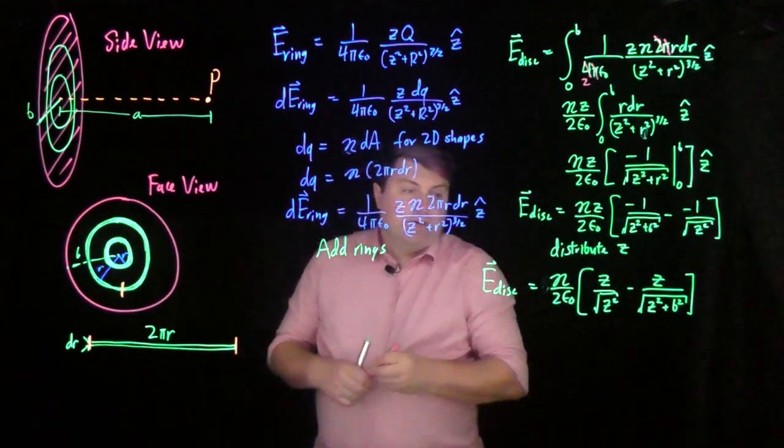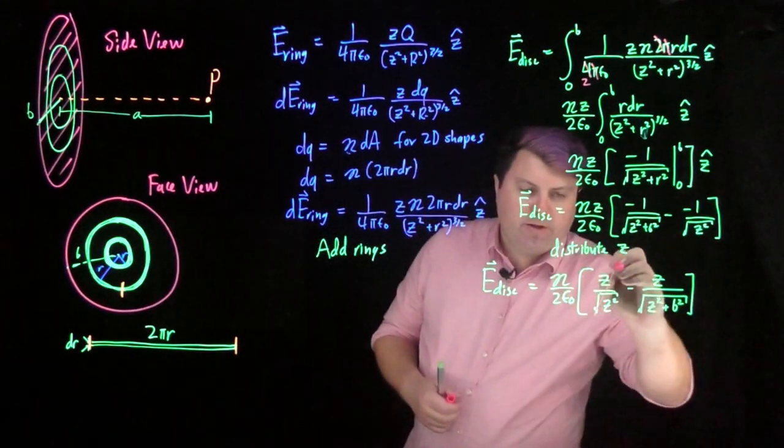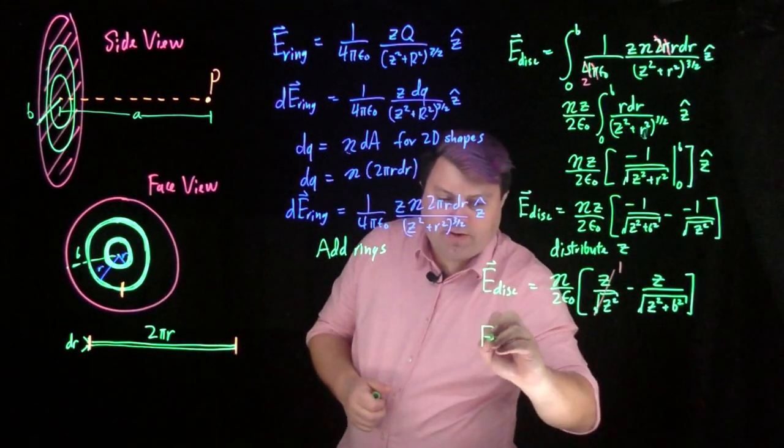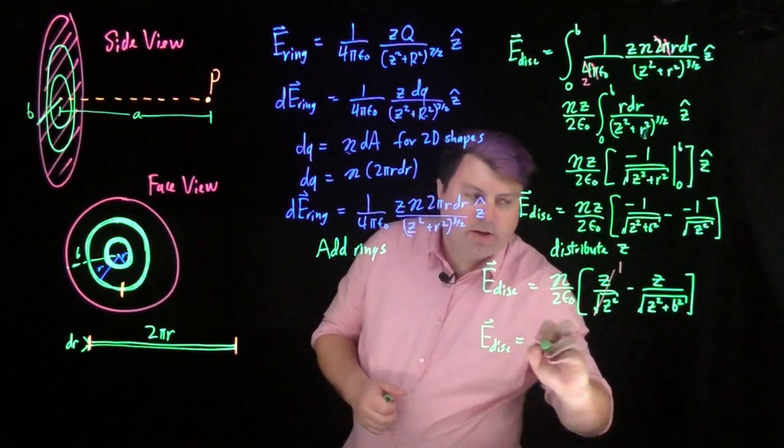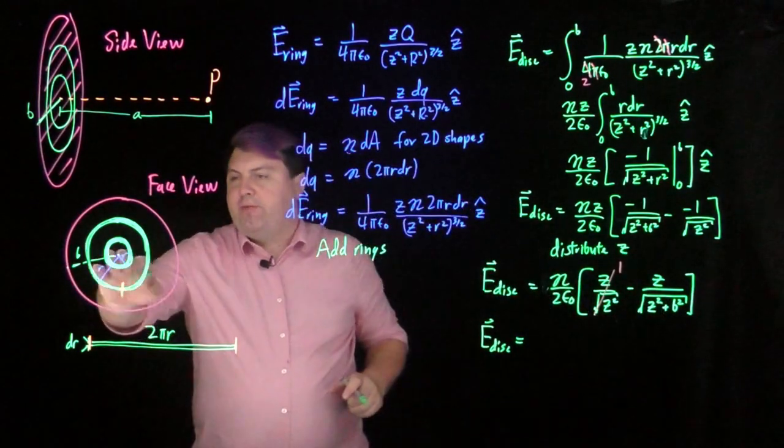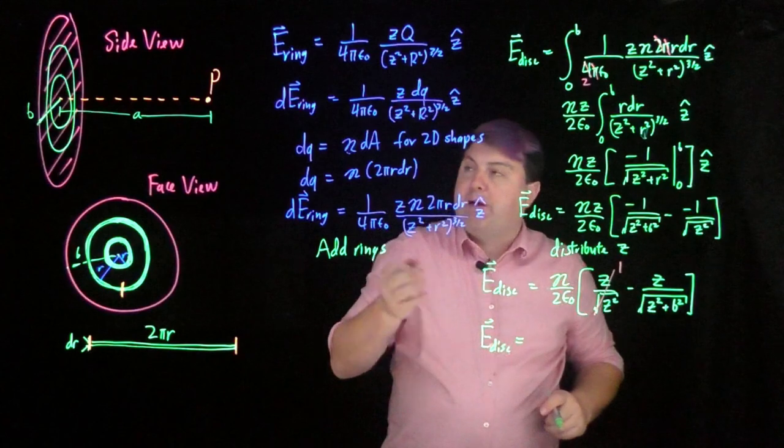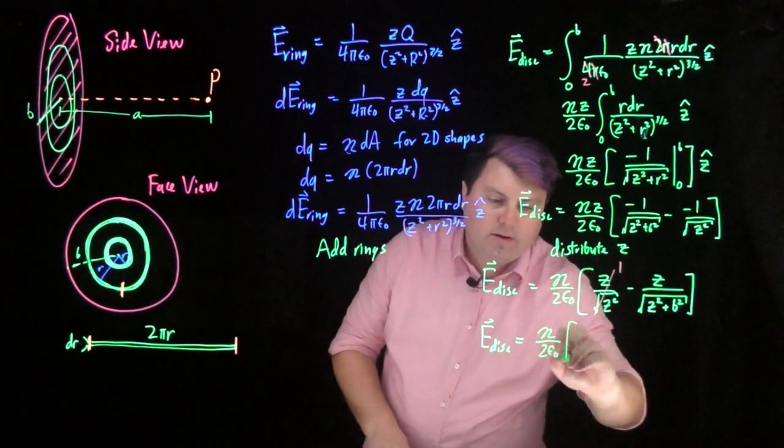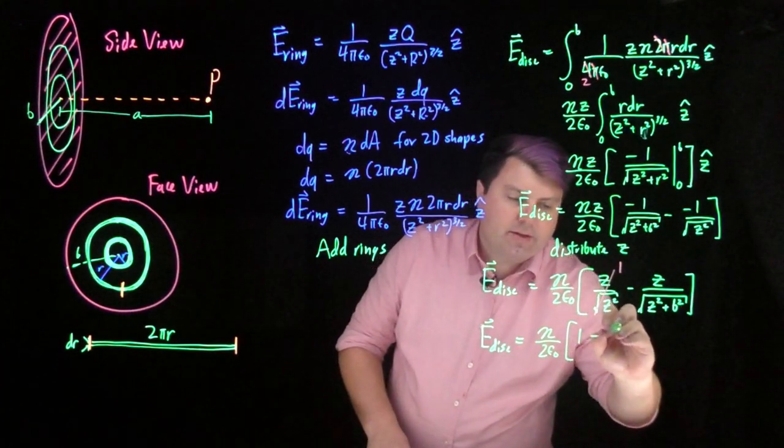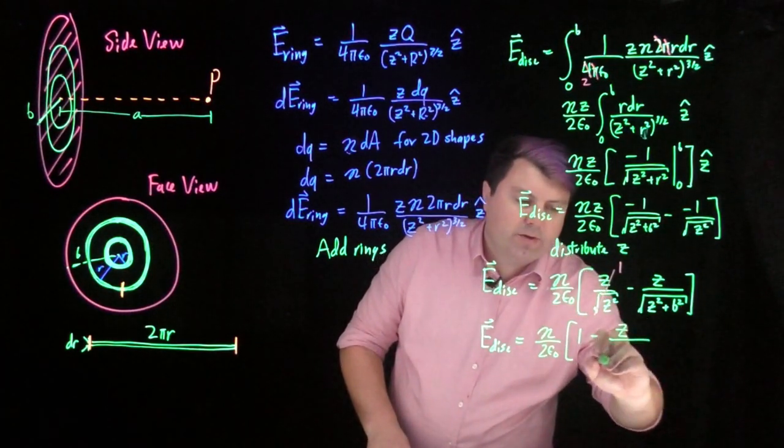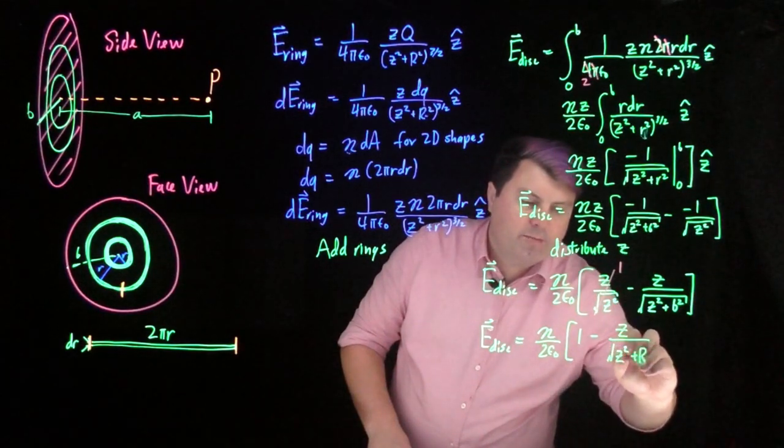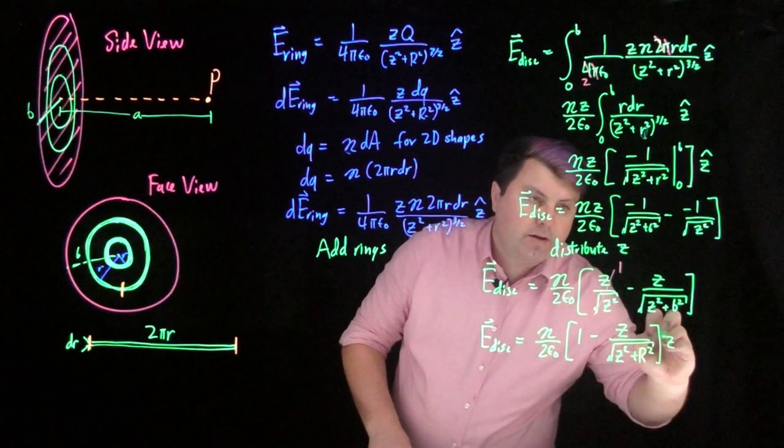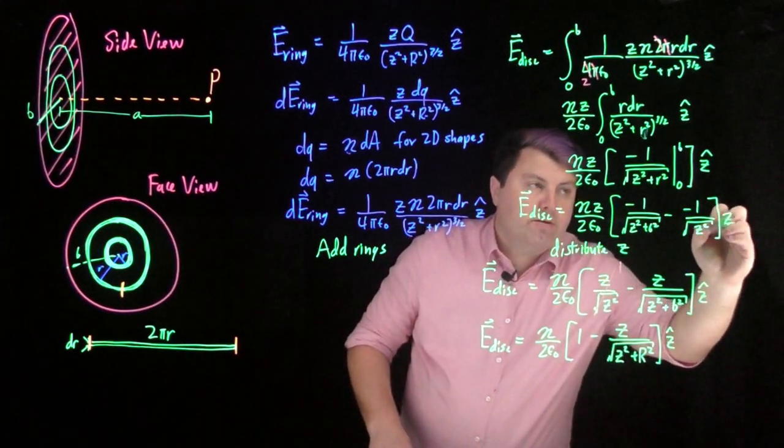So z squared, z over square root of z squared, this just becomes 1. And so the electric field of our disk, b is kind of a rough thing to use, so we'll just go back to r being the radius of the disk. So eta over 2 epsilon naught, 1 minus z over the square root of z squared plus the radius of the disk squared in the z hat direction.